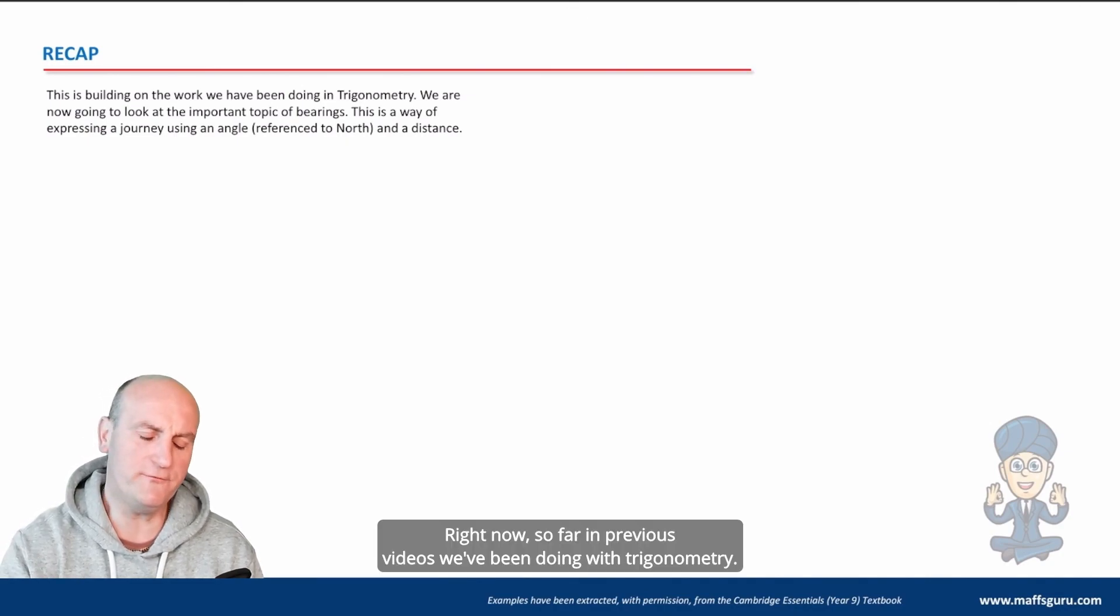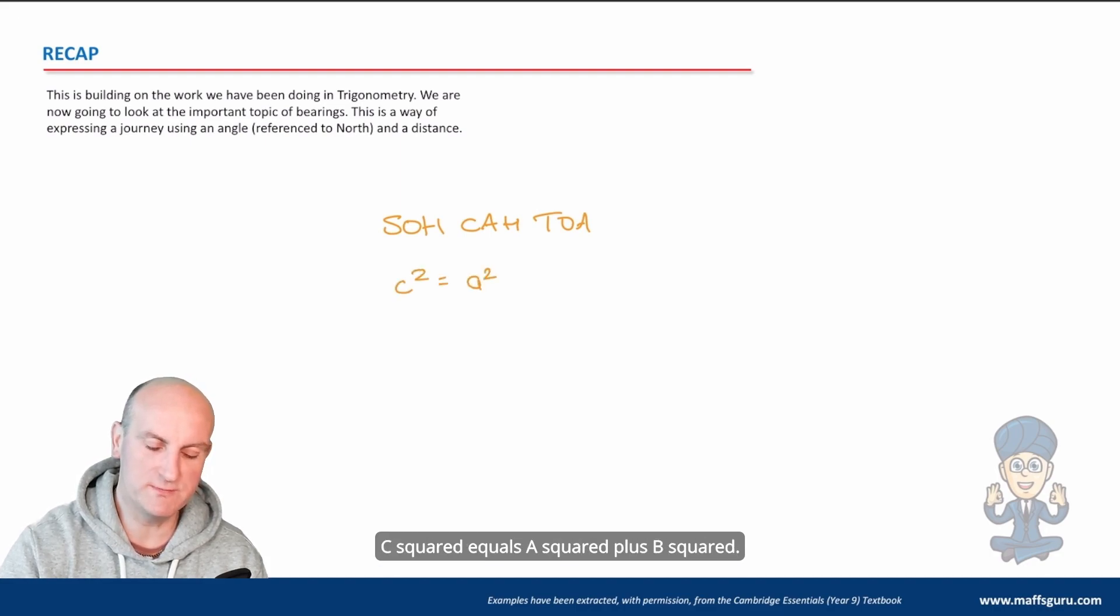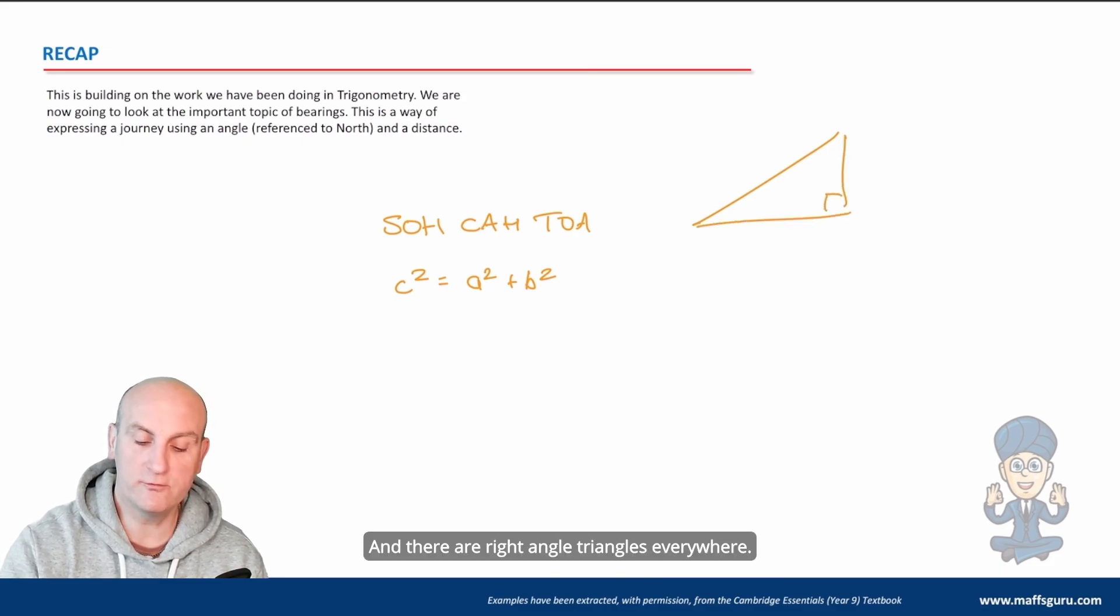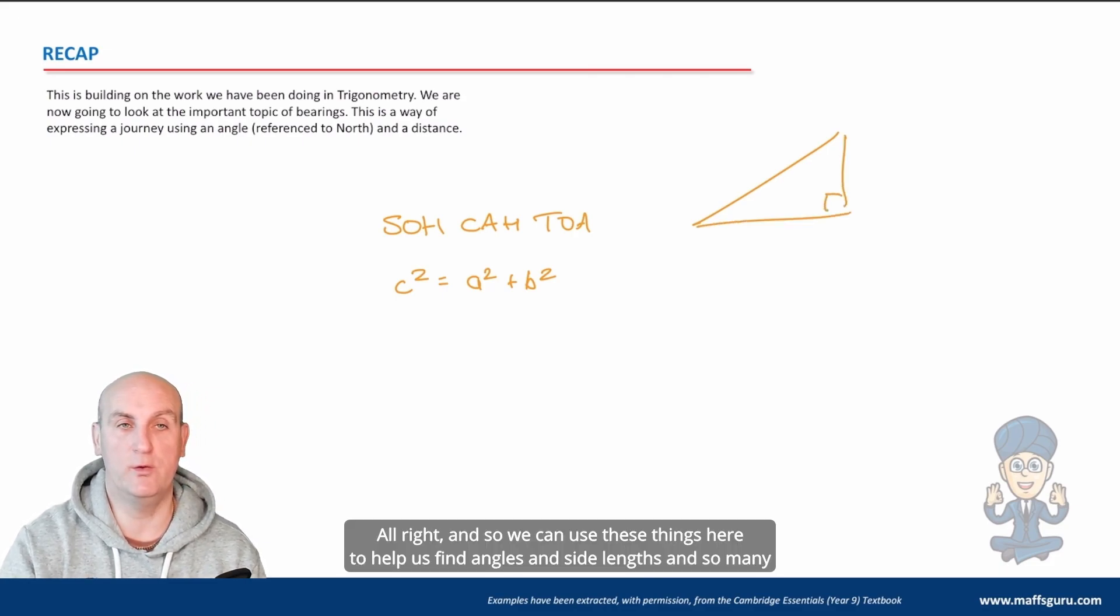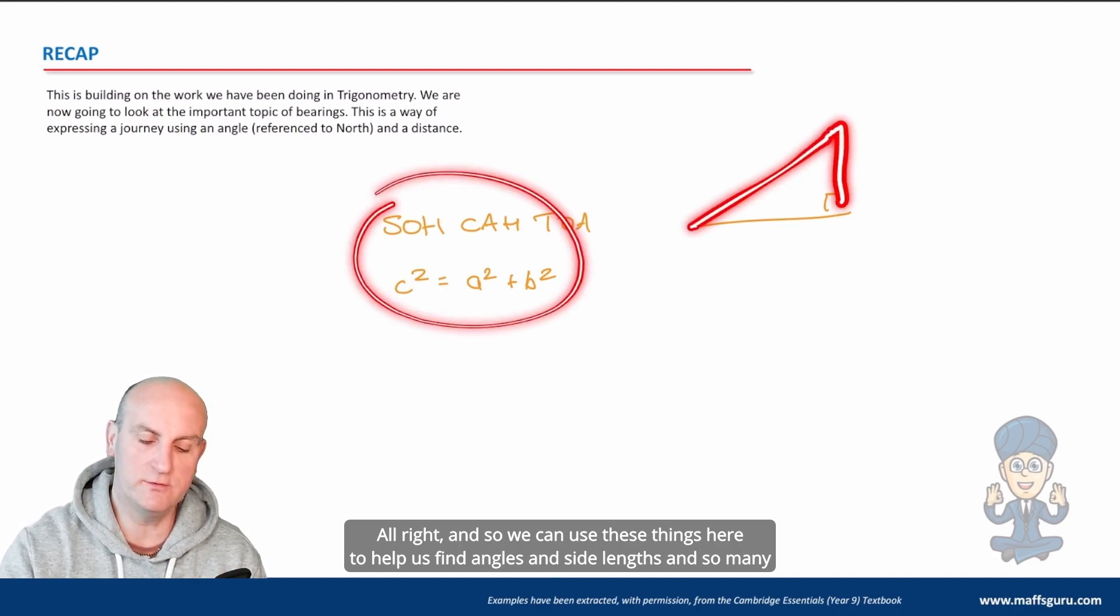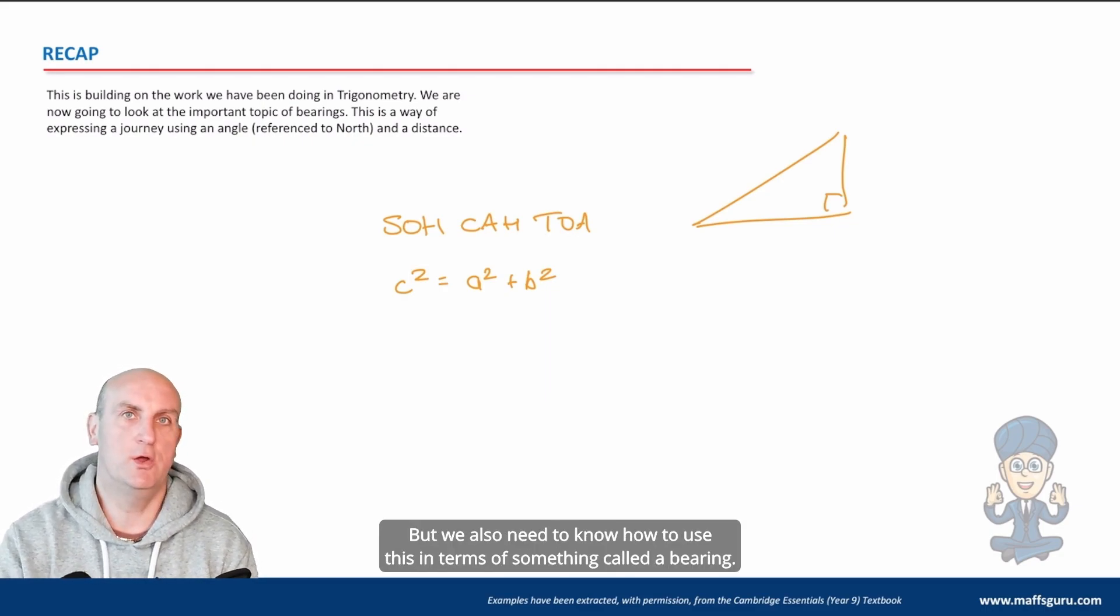Right now, so far in previous videos we've been doing trigonometry. So we've had SOH CAH TOA and we've had Pythagoras' theorem, c squared equals a squared plus b squared. They all deal with right angle triangles. And there are right angle triangles everywhere. And so we can use these things here to help us find angles and side lengths and so many other things. That's really, really important.